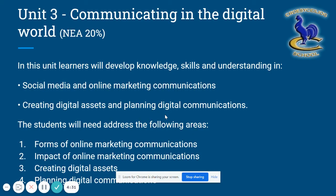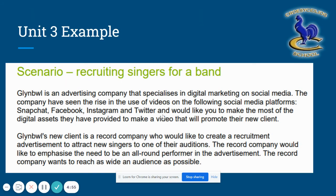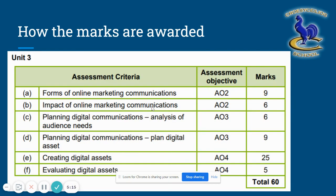The third unit, the second NEA, is about social media — specifically creating a social media campaign. Students look at how social media is used and then come up with their own social media campaign based on a given scenario. For example, students may need to make a social media post — whether an advert, a video, or moving images with text — for a record company. Creating is worth 25 out of 60 marks, with the rest going to planning, evaluating, and so on.